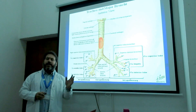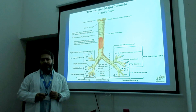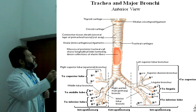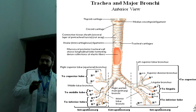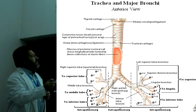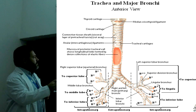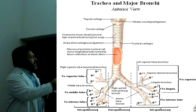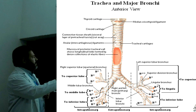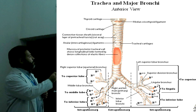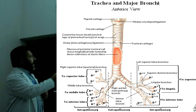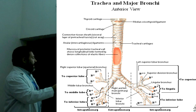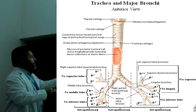To answer that question, we need to look at the anatomy a bit more and understand the physiology a bit more. The main respiratory passage, the trachea, divides into the two principal bronchi. On the right side, we have the right superior lobe bronchus going into the upper part, the middle lobe bronchus going into the middle, and the inferior lobe bronchus going into that area.